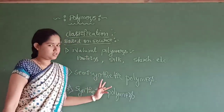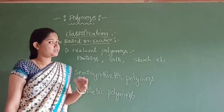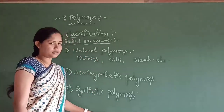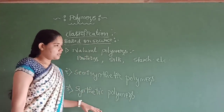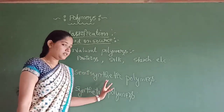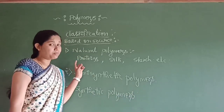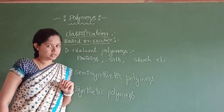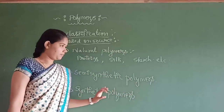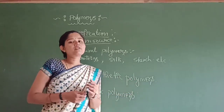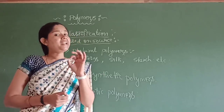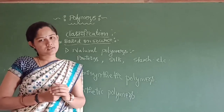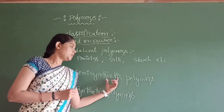The second category is semi-synthetic polymers. Semi-synthetic polymers are in between natural polymers and synthetic polymers. These polymers are derived from natural polymers by chemical modifications to enhance desired characteristics.